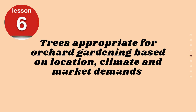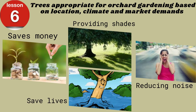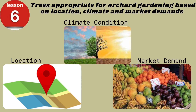Now let's proceed to Lesson 6: trees appropriate for orchard gardening based on location, climate, and market demands. Trees and fruit-bearing trees do a better job of saving us money, providing shade, reducing noise, and even saving our lives from calamities. Establishment of an orchard is a long-term investment and requires very critical planning. The selection of proper location, climate condition, and market demands must be considered first.